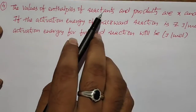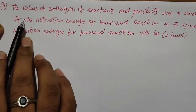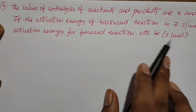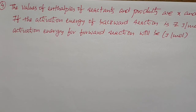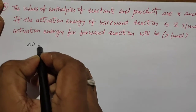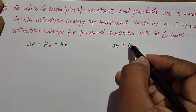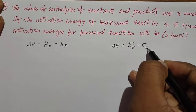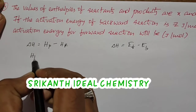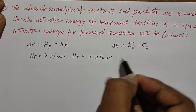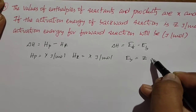This is the next problem. The value of enthalpy of reactants and products are X and Y joules per mole. If the activation energy of the backward reaction is Z joules per mole, the activation energy for the forward reaction will be in joules per mole. They give the enthalpy of reactants and enthalpy of products, and the activation energy for the backward reaction, and ask for the activation energy for the forward reaction. HP is given as Y joules per mole, HR is given as X joules per mole, and Eb is given as Z joules per mole.